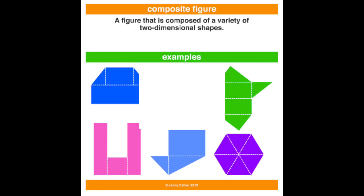So that was a review of what we did last time, and now we can get into what composite shapes are. A composite figure is a figure that is composed of a variety of two-dimensional shapes. So we take more than one of the shapes we already learned about and put them next to each other to make a new shape.